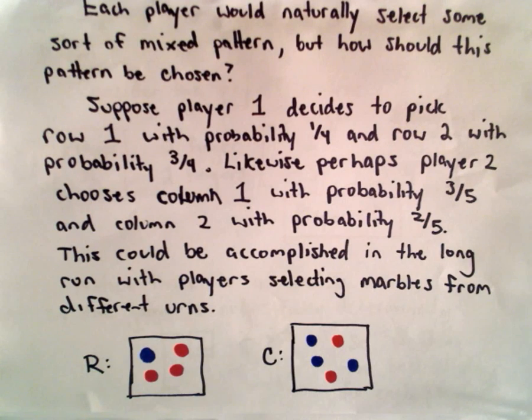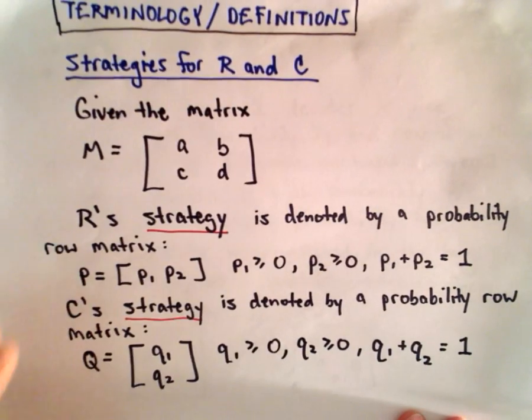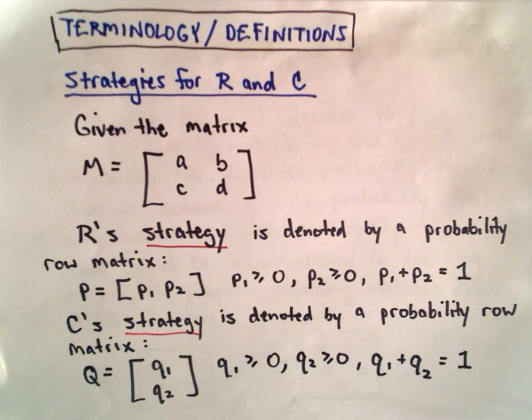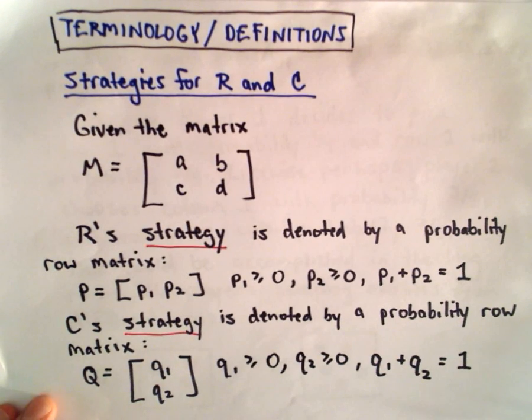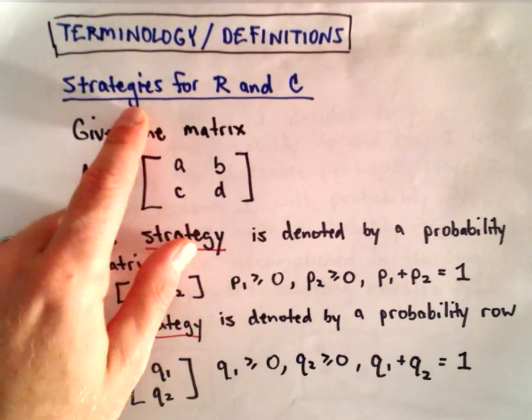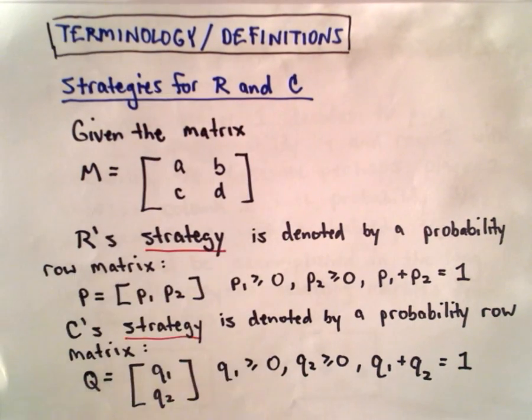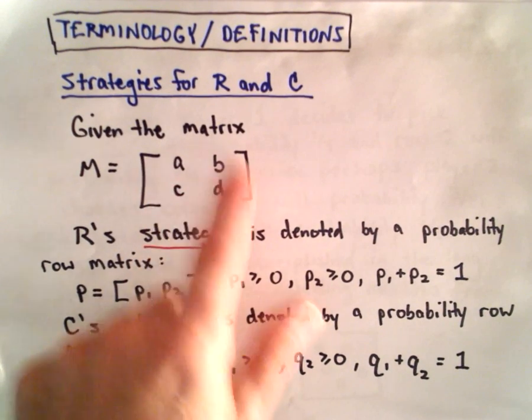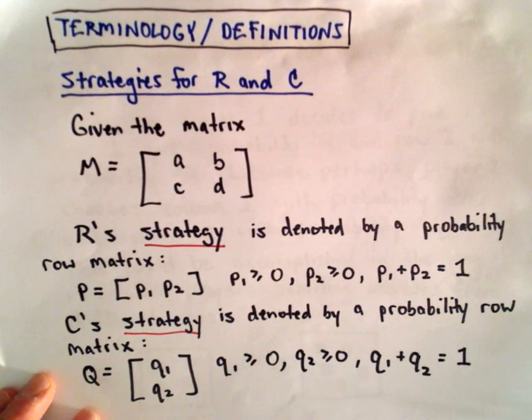Okay, let's introduce some terminology here. And again, we're not really going to do many computations in this video. Just going to introduce some ideas. And then we'll start grinding on some stuff in the next example, in the next video. Okay, so we're going to introduce some definitions. And this is what are known as strategies for player R and player C. So suppose we've got some matrix with entries A, B, C, D. I'm just restricting myself to a two-by-two matrix here.